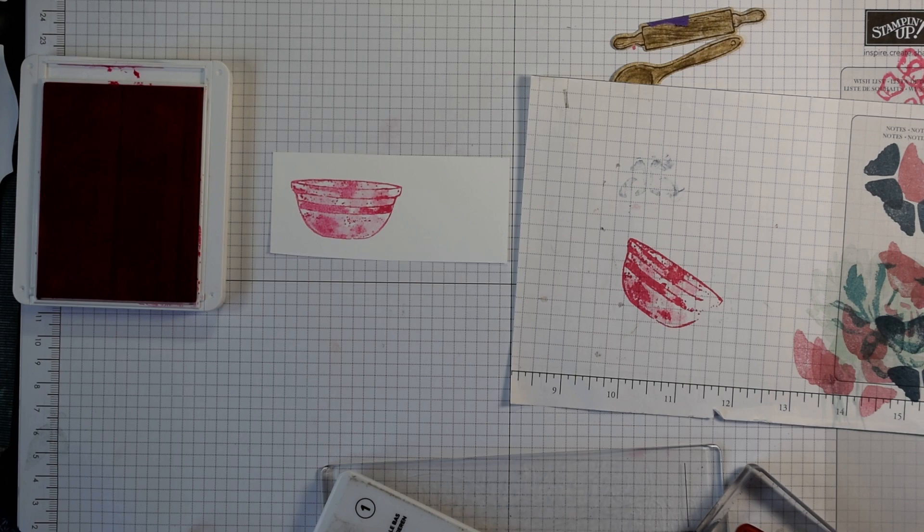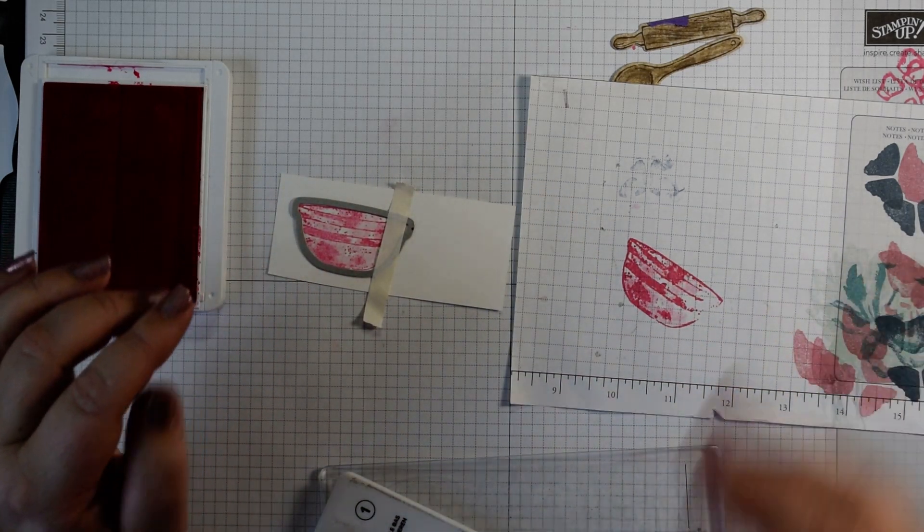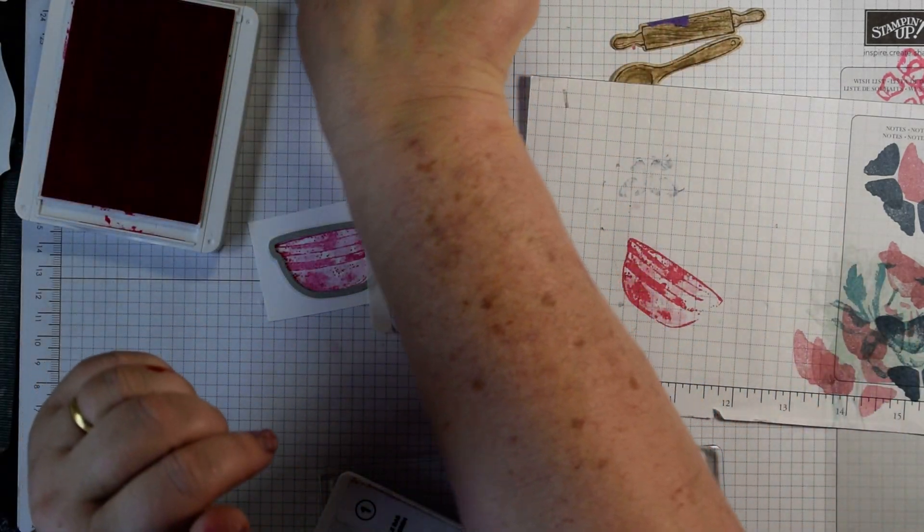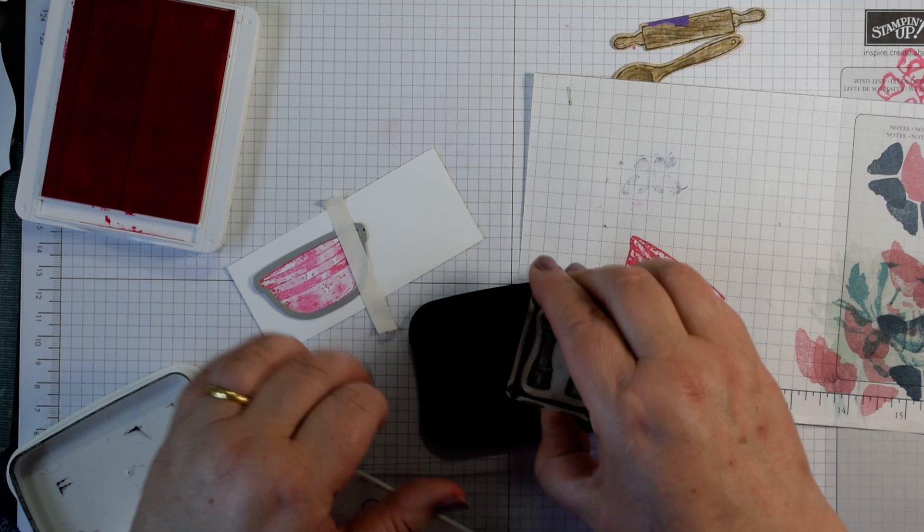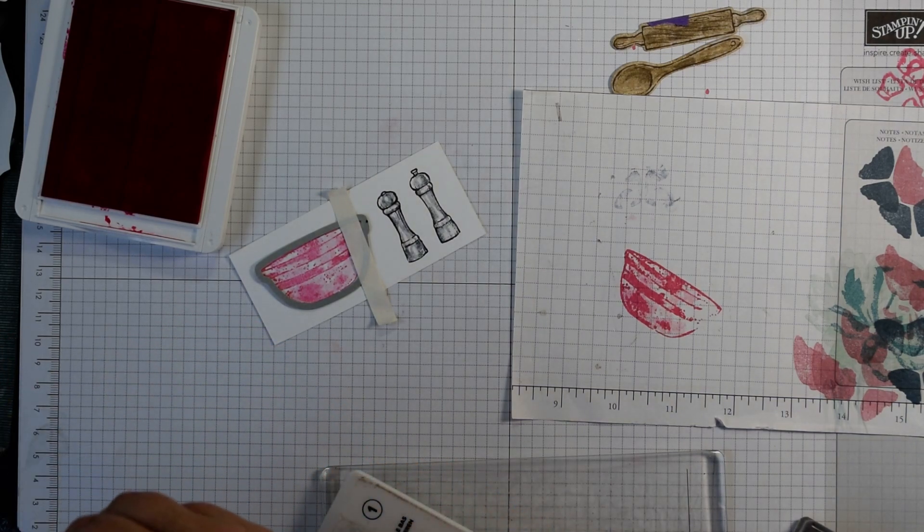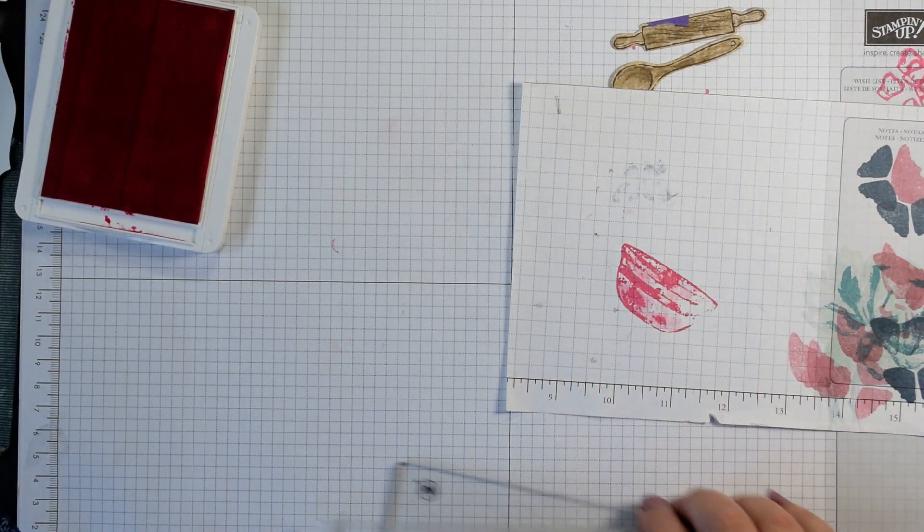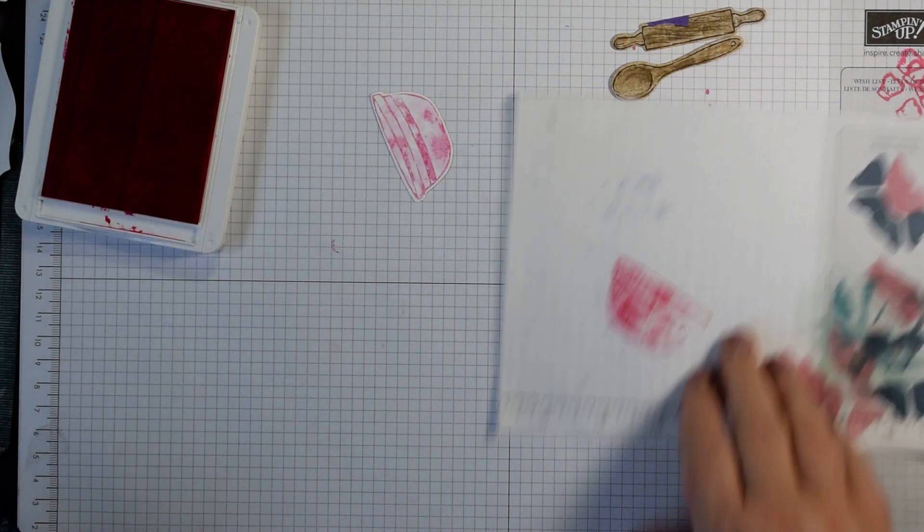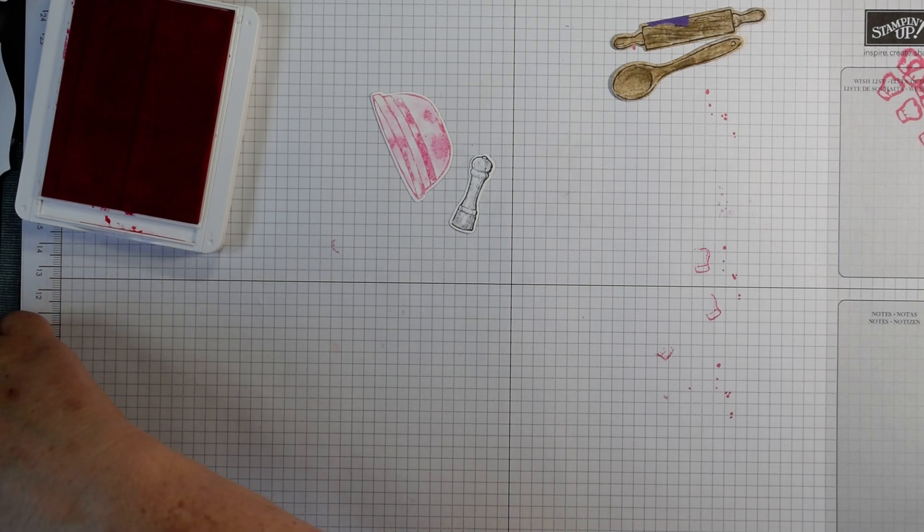I've got a really nice crisp image. Again just add your die to that and pop that through the embossing machine. The other items I'm actually going to stamp in memento black because I want to add a bit of color with my stamping blends. I'm going to leave that ink pad out because I'm going to use that in a moment. I want to add a salt and pepper and by stamping in memento ink it means we can color with our stamping blends.